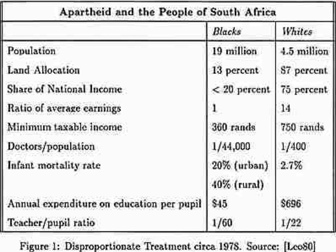Back in 1978, the South African government spent $45 a year to educate a black child and $696 a year to educate a white child. The teacher-to-student ratio was 1 teacher for every 22 white children, but 1 black teacher for every 60 black children. The Bantu Education Act specifically stated that blacks were only allowed to learn skills they would need in working for whites, so they were not given access to higher or even secondary education.